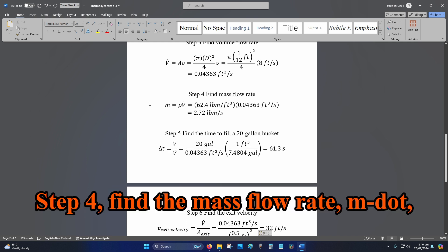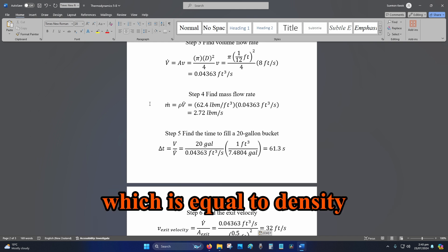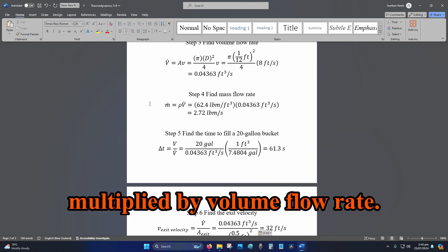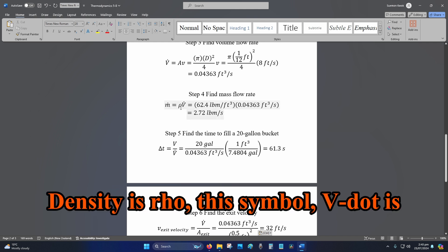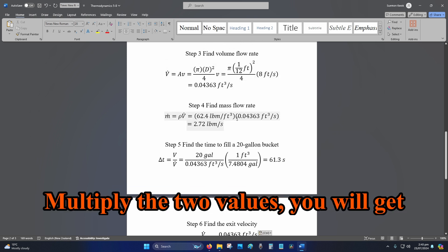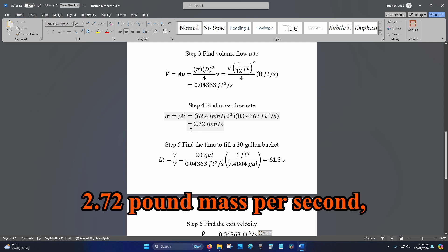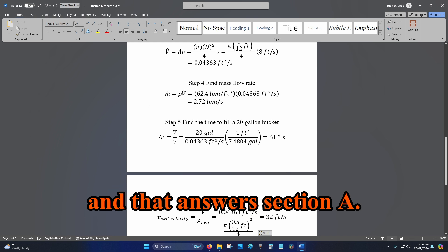Step 4, find the mass flow rate, m dot, which is equal to density multiplied by volume flow rate. Density is rho, this symbol. V dot is your volume flow rate, which you found in step 3. Multiply the two values, you will get 2.72 pound mass per second. And that answers section A.